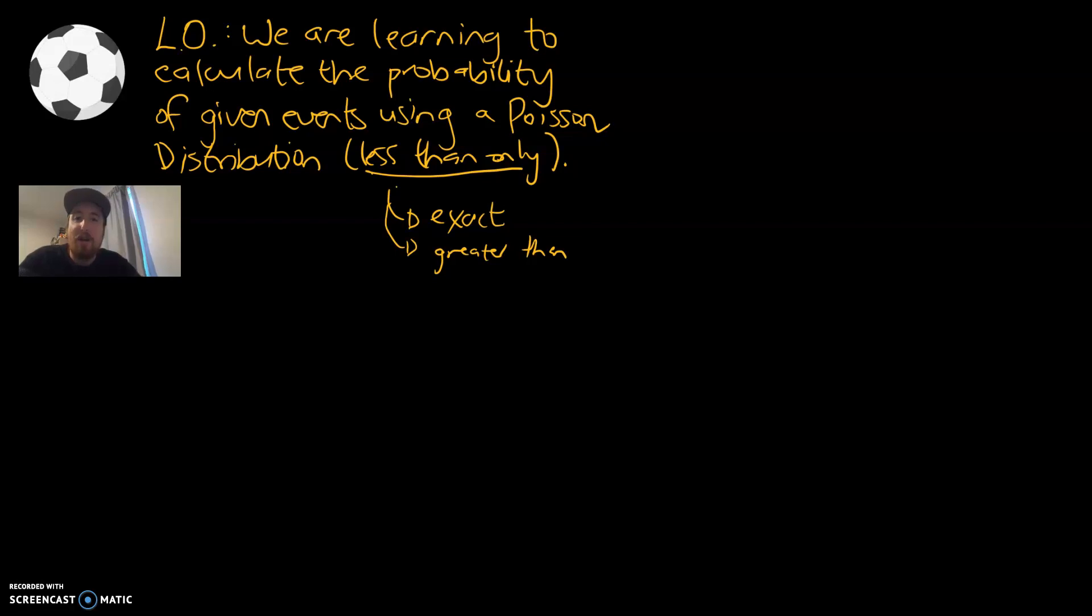Hey guys, Mr. Bowman here. Today's learning objective is in yellow and we are learning to calculate the probability of given events using a Poisson distribution.